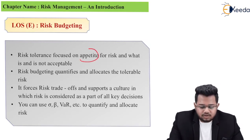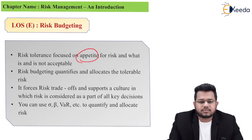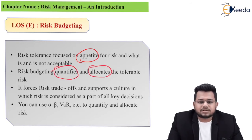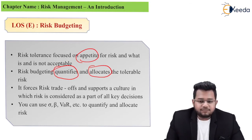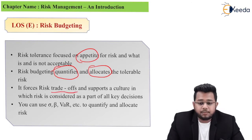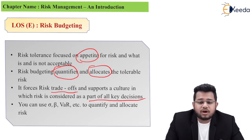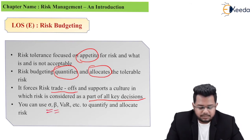Risk tolerance focused on appetite for risk — what is and what is not acceptable. Risk budgeting quantifies and allocates the tolerable risk. It forces risk trade-offs and supports a culture in which risk is considered as a part of all key decisions. Whatever decision you are taking, the risk you have quantified, you have to consider that. You can use standard deviation, beta, value at risk, etc.